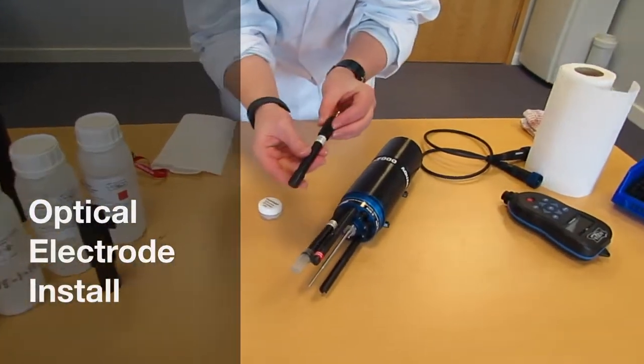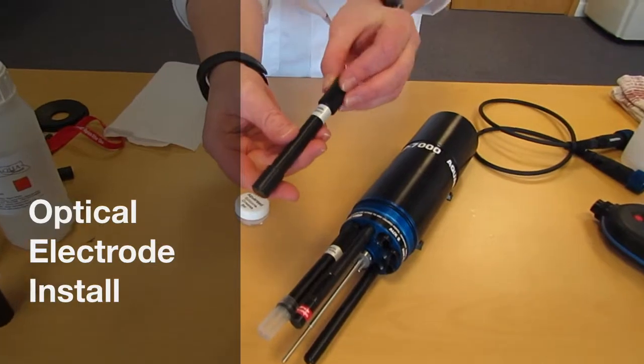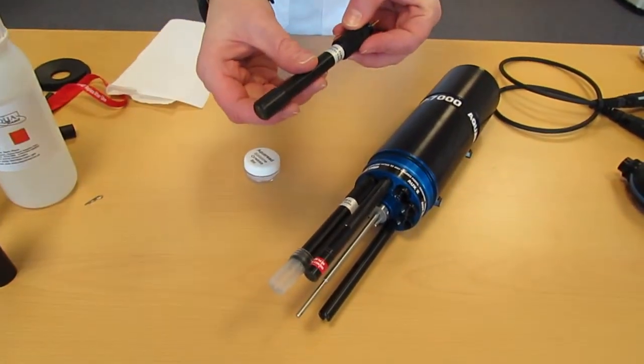Next we're going to be installing an optical electrode into the AP7000. This electrode is a turbidity electrode.